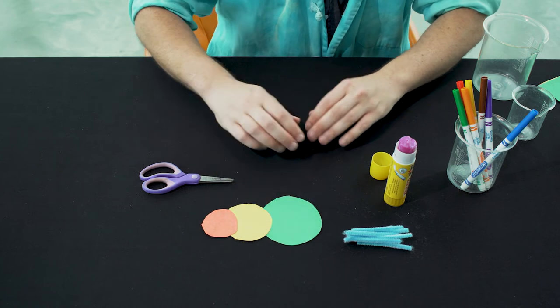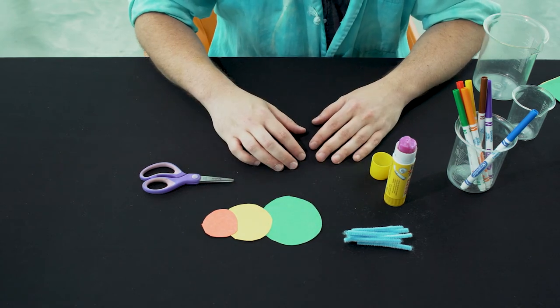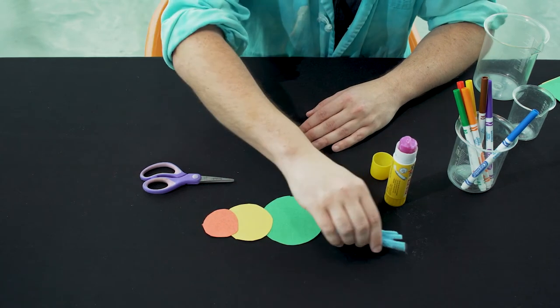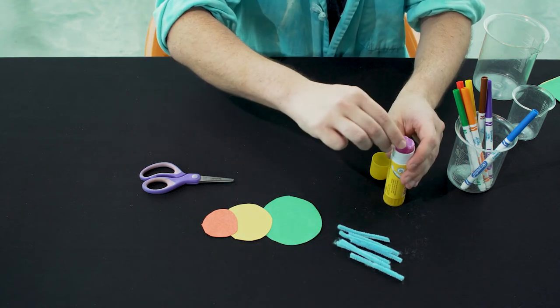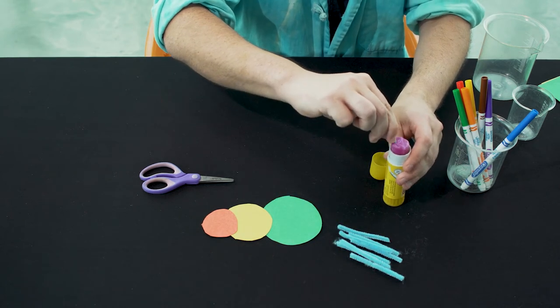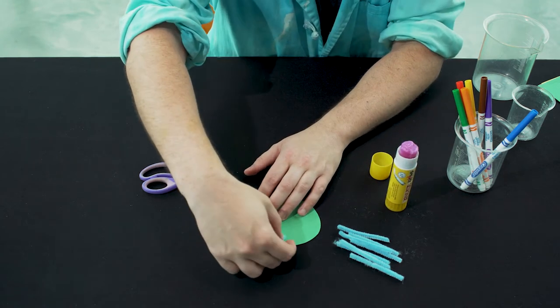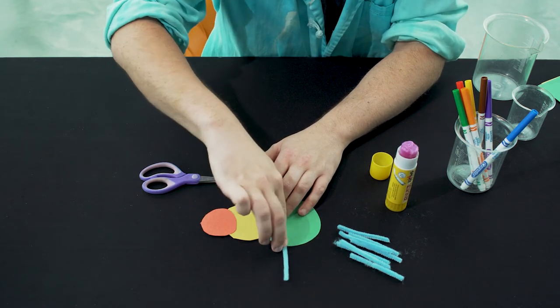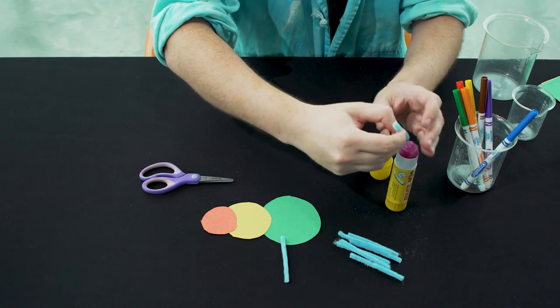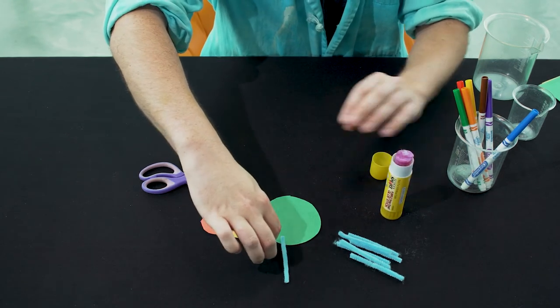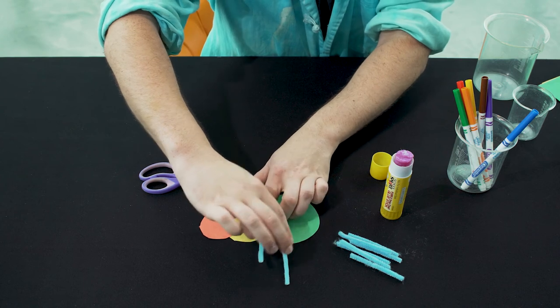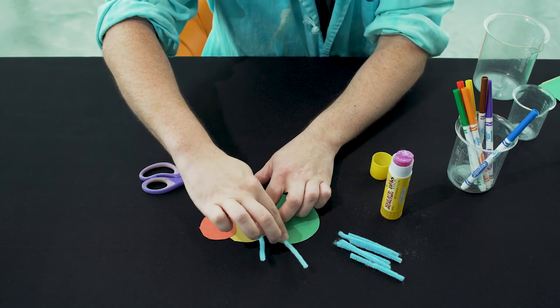Next, our insect needs legs so it can walk and antennae so it can sense the world. So, we're going to take our pipe cleaners and glue them on both sides of our insect like so. Insects have six legs so our insect will be getting six pipe cleaners.